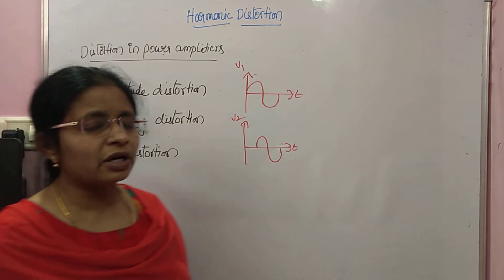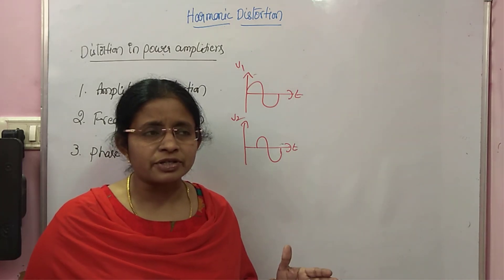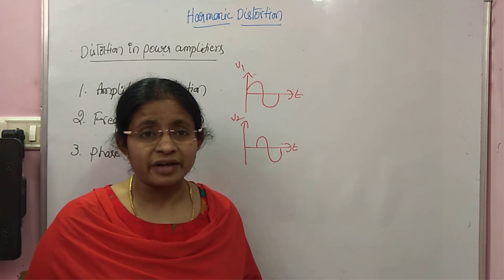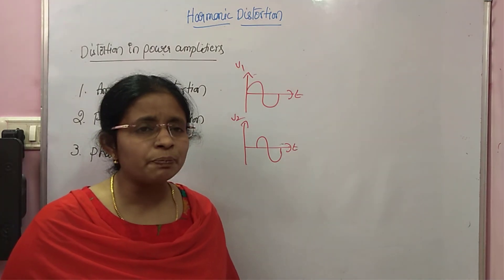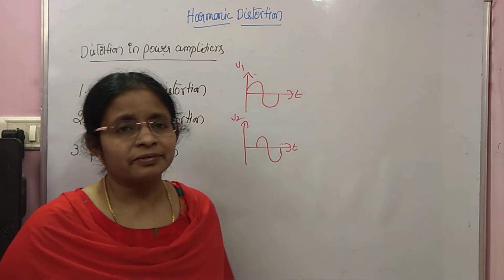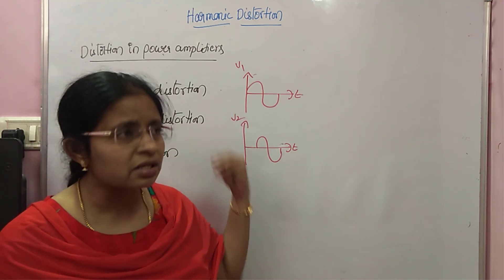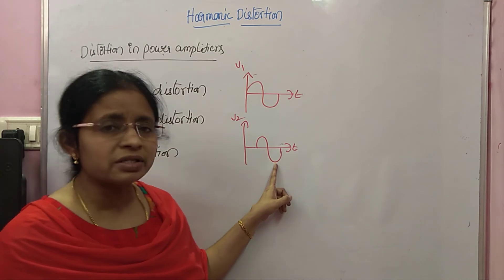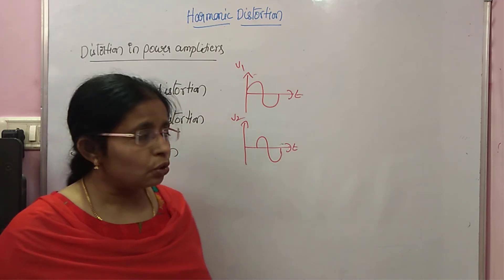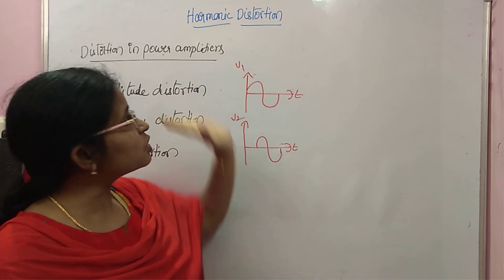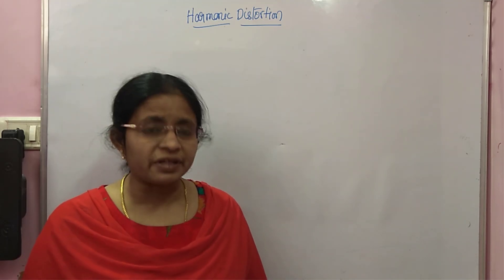The last one — amplitude distortion — is very very important. In power amplifiers, amplitude distortion occurs because of the non-linearity of the transistor being used. The amplitude distortion present in the power amplifier output is called harmonic distortion. We must consider it, because any distortions in the change of the signal will cause us to lose information or receive wrong information.